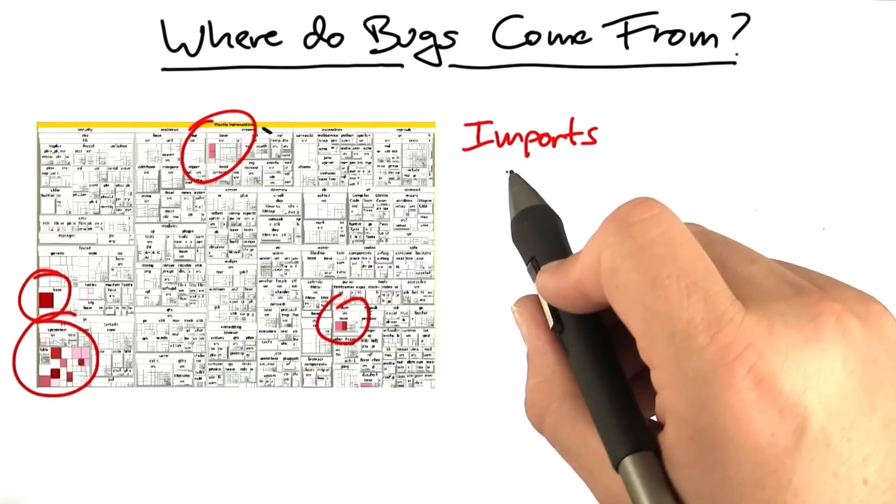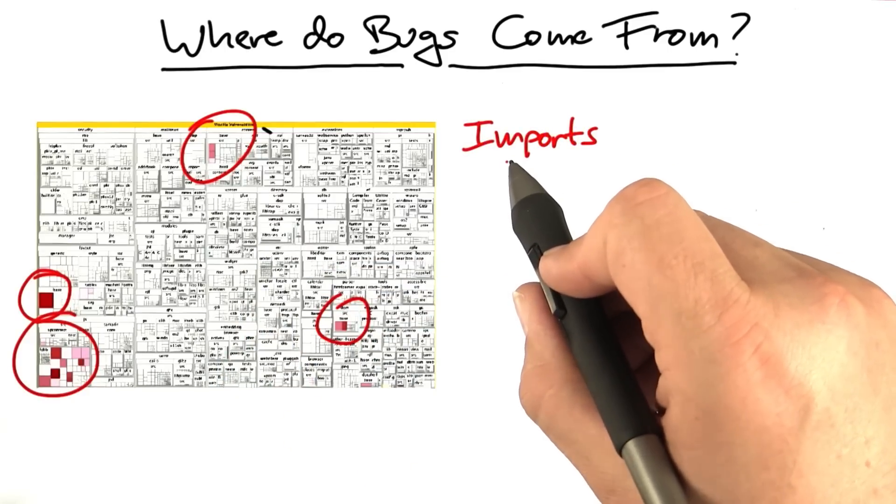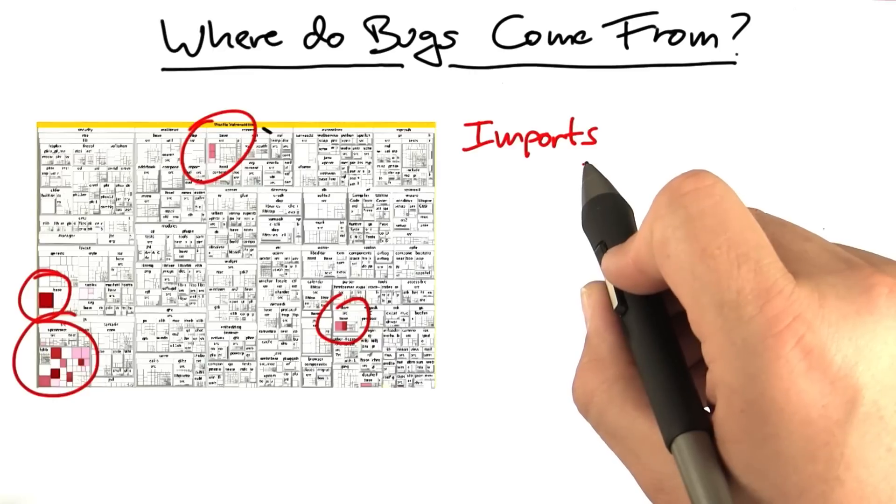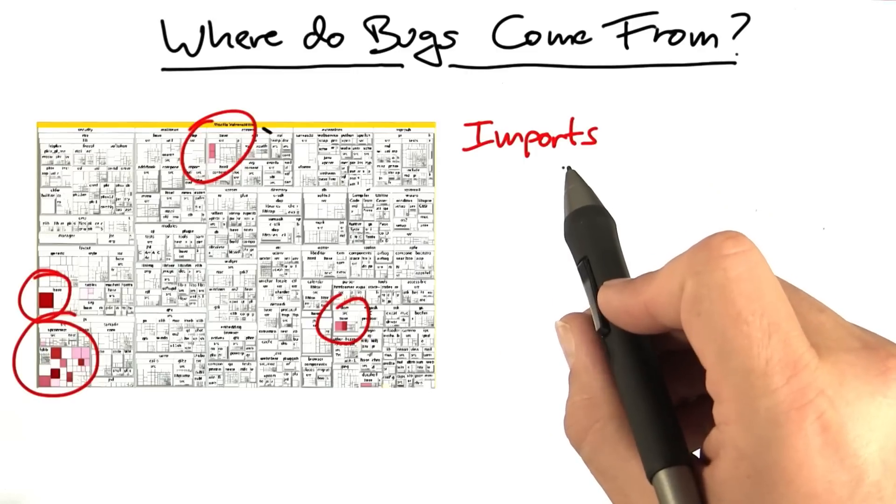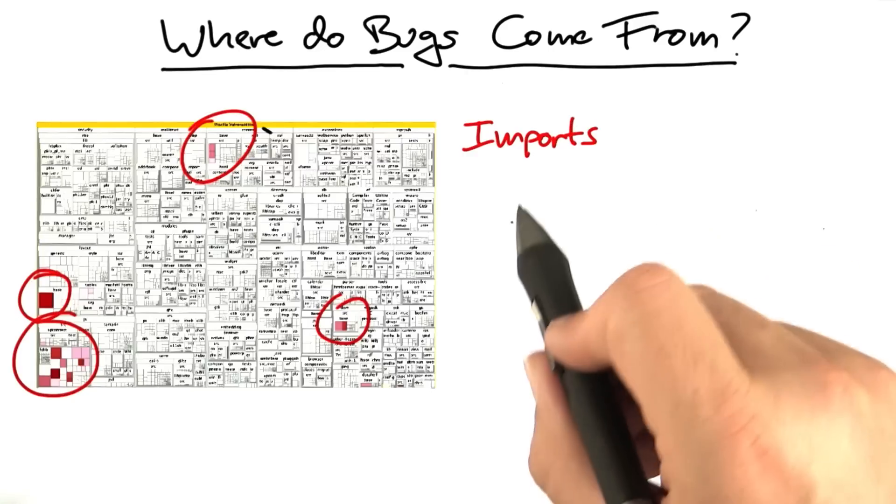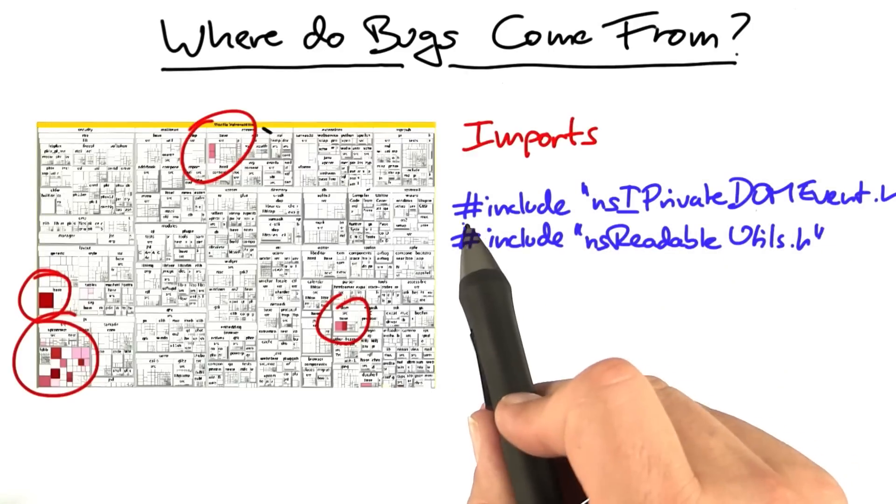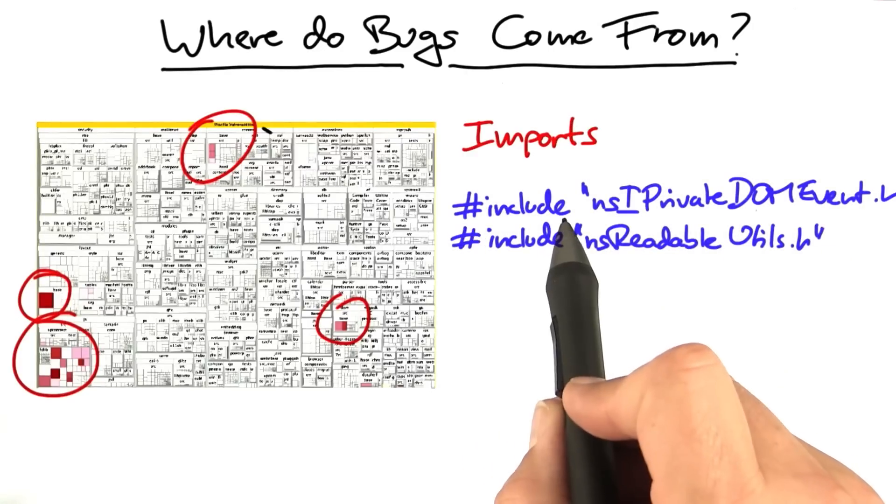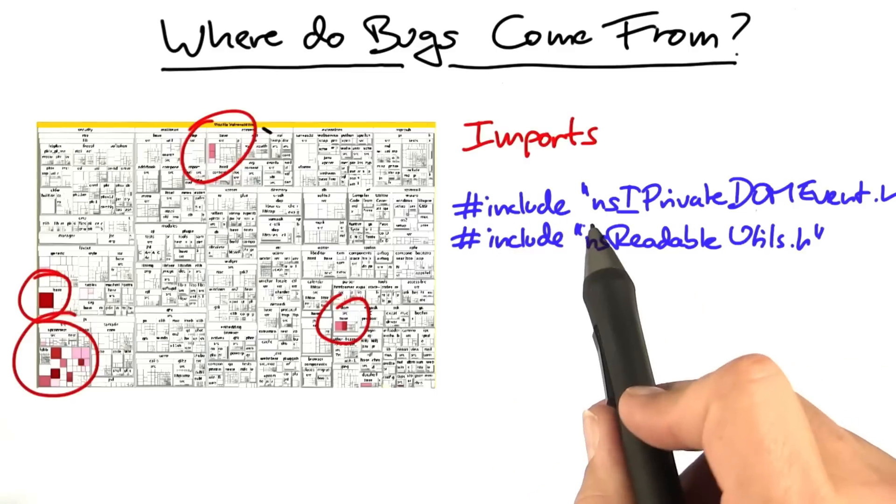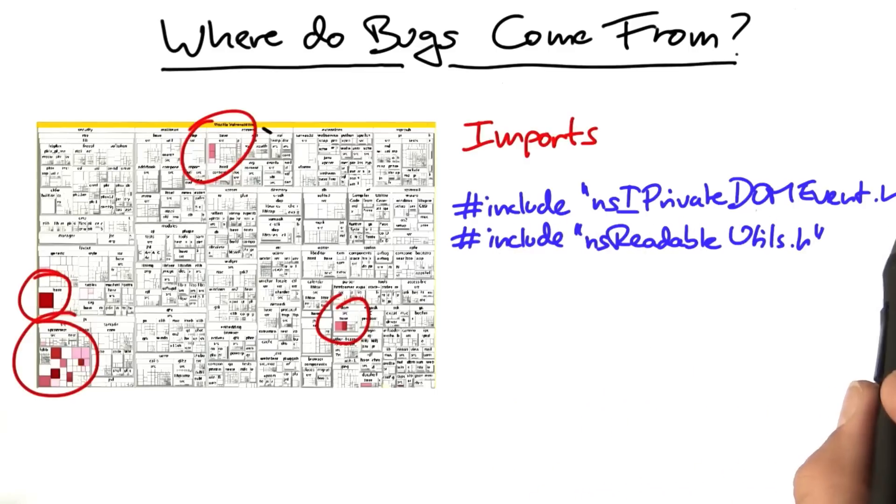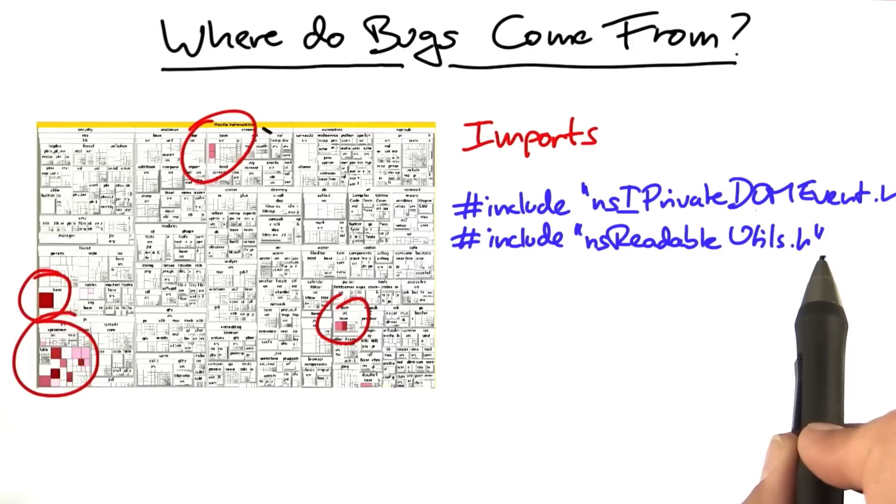And these were the imports made by individual modules, that is, the other modules that the module in question would interact with. More specifically, whatever a module imported would determine its likelihood to have a defect. In Firefox, for instance, if your module included nsi-private-dom-event.h and ns-readable-utils.h...